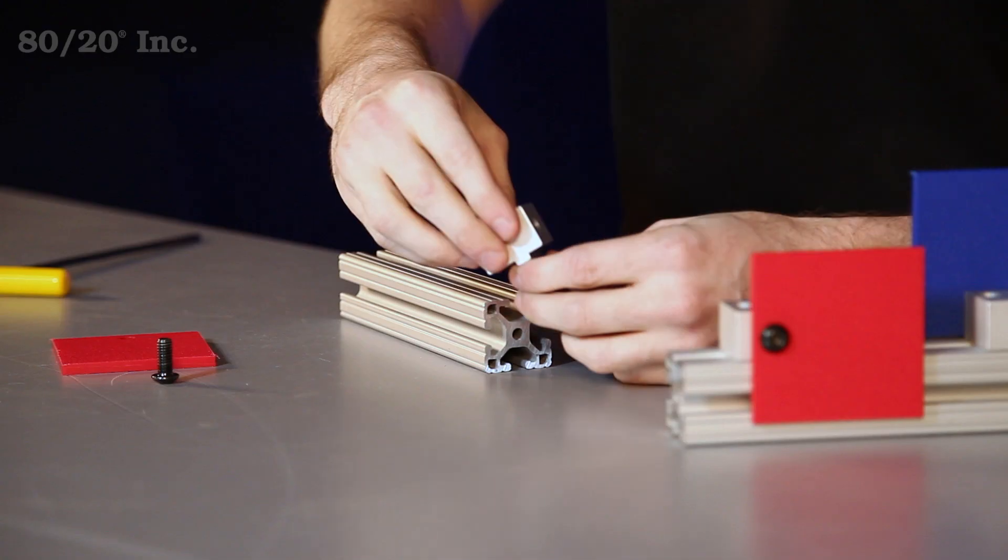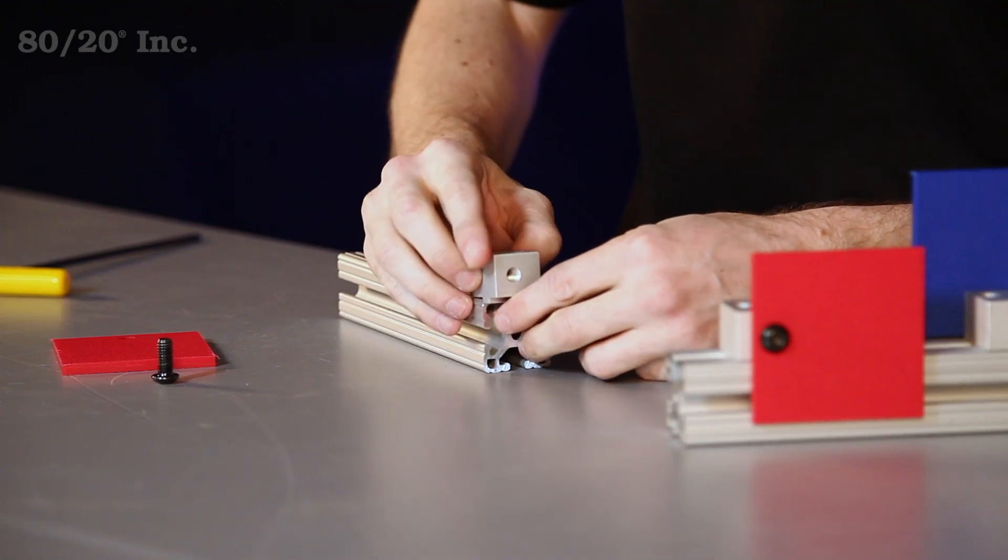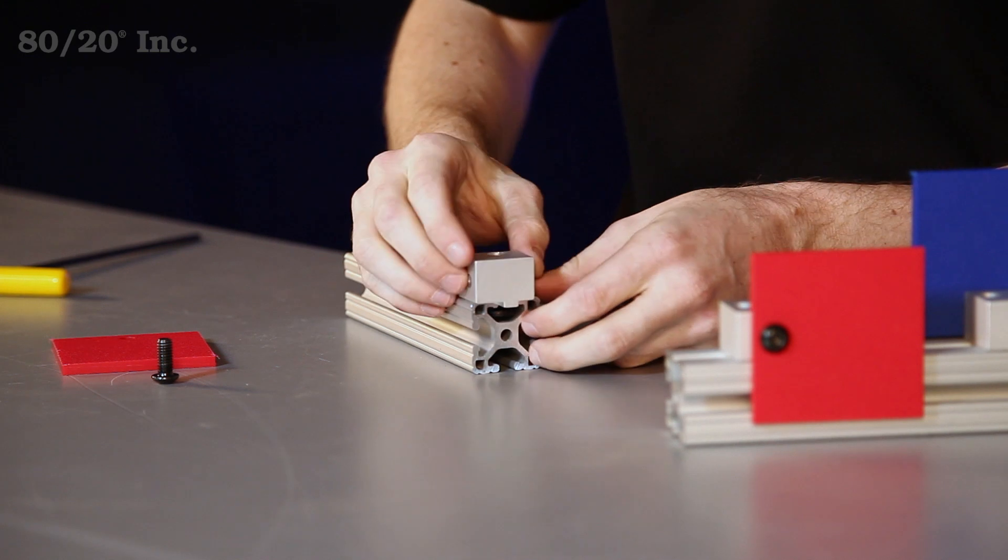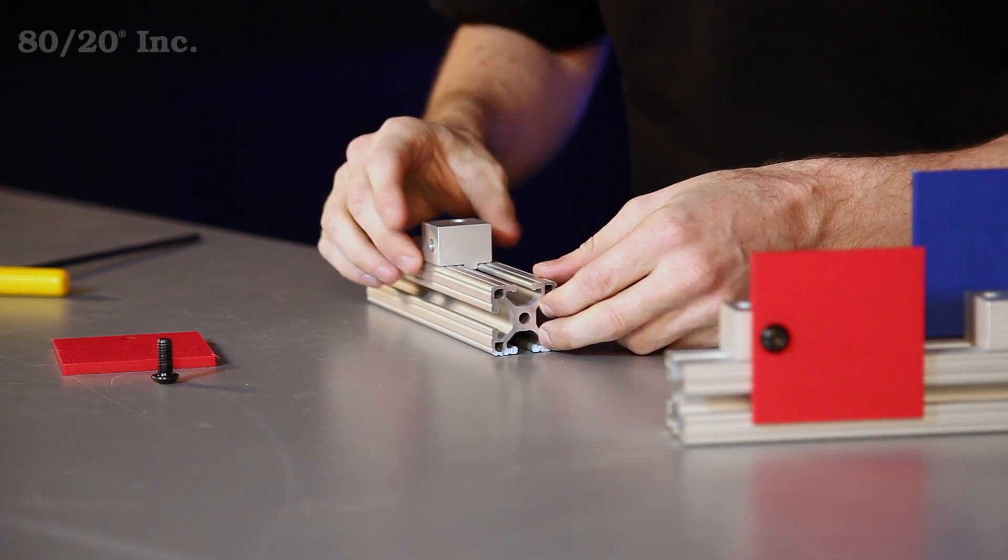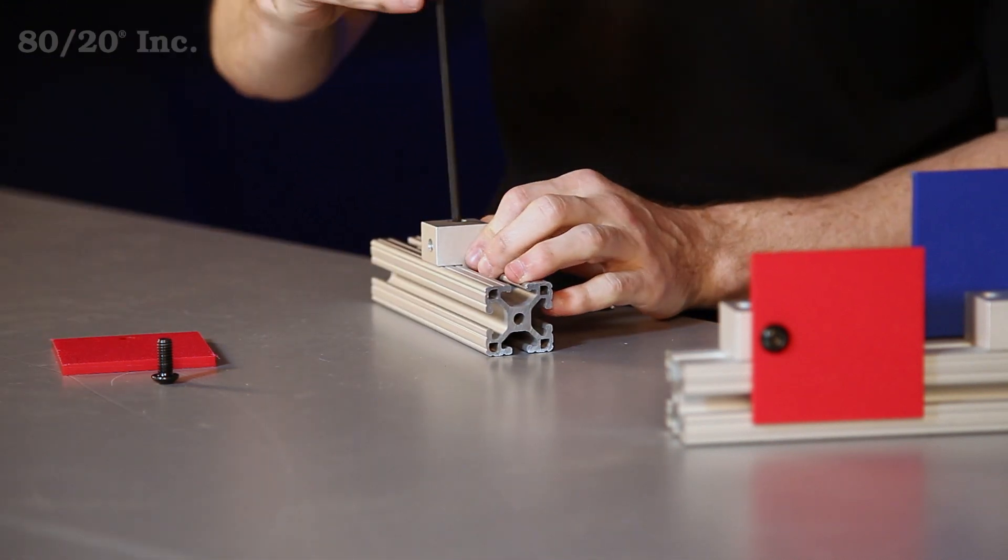So we'll take our panel mounting block, we'll go ahead and slide it into the open T-slot, find the location we want, and tighten it down with our wrench.